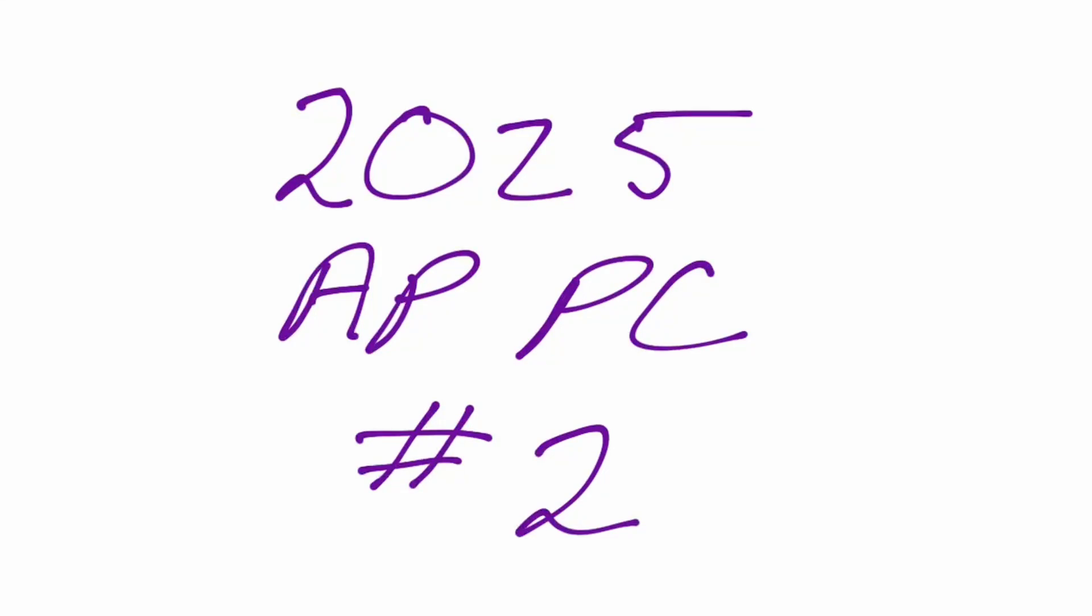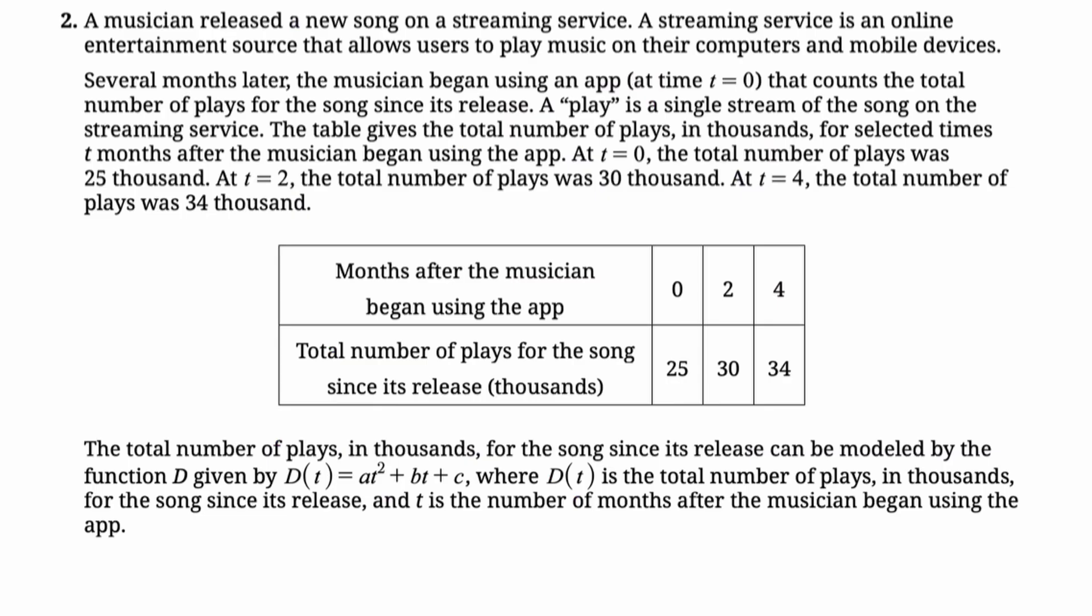Okay, in this video we're going to talk about number two from the 2025 AP Pre-Calculus exam. It's just an absolute wall of text. So this is it. Basically you have D of T, which is A times T squared plus B times T plus C, and you're given this table of values. It's months after they began using an app, and the total number of plays for the song since its release. Most of that paragraph above is kind of trying to help you understand it. So let's see if we can do the problem.